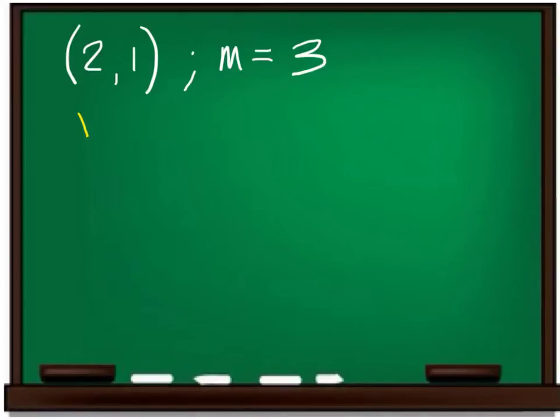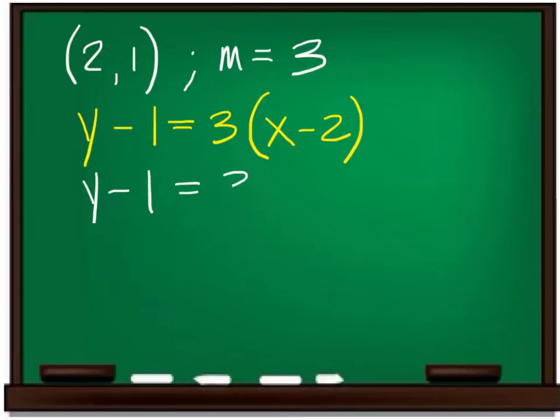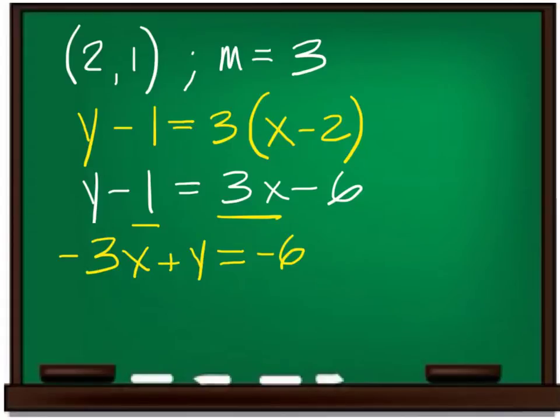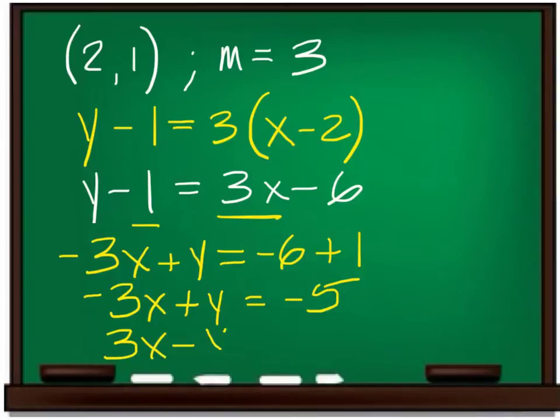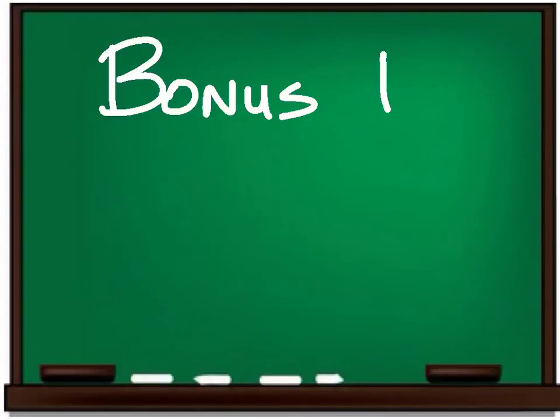On the practice, you should have y minus 1 equals 3 times the quantity x minus 2. And then to convert it to standard form, you're going to have y minus 1 equals 3x minus 6. Switch this one and this one. Negative 3x plus y equals negative 6 plus 1. That's going to be a negative 5 on the end. Change the sign of everything. 3x minus y equals 5.